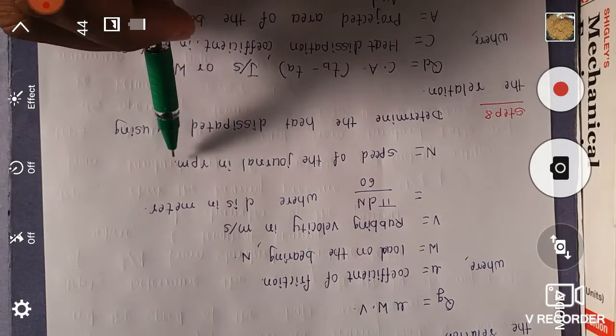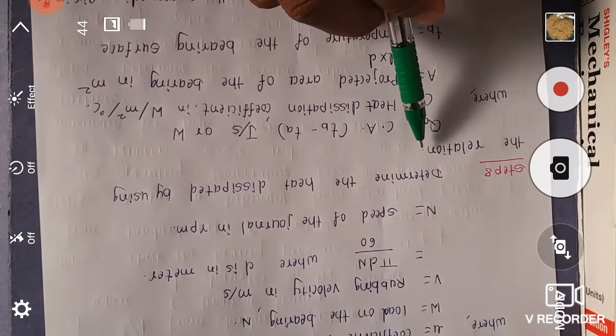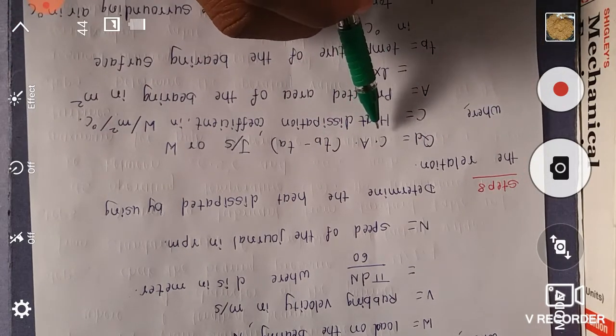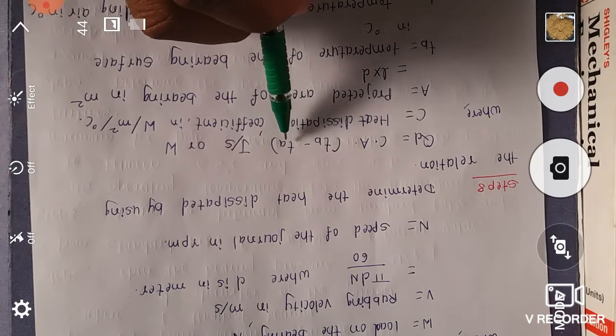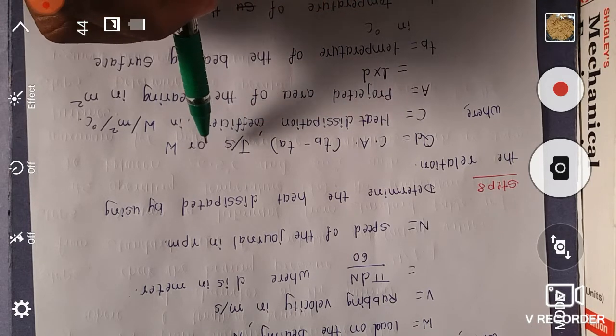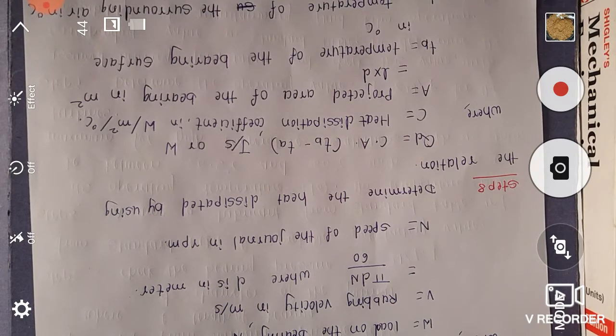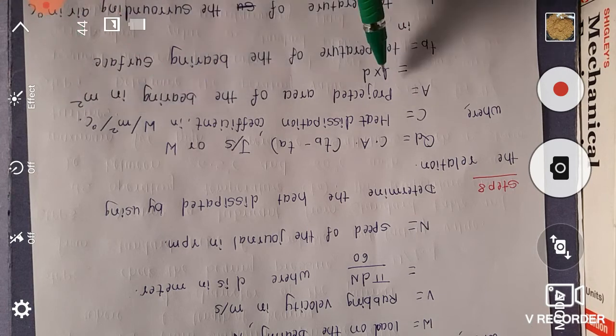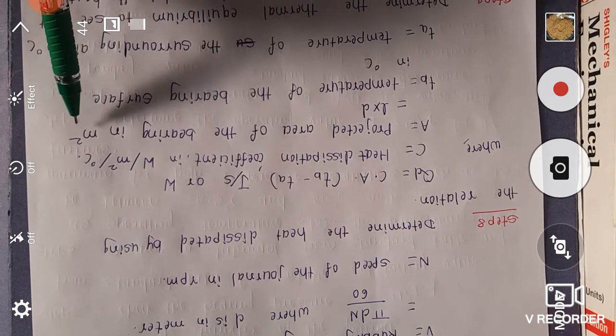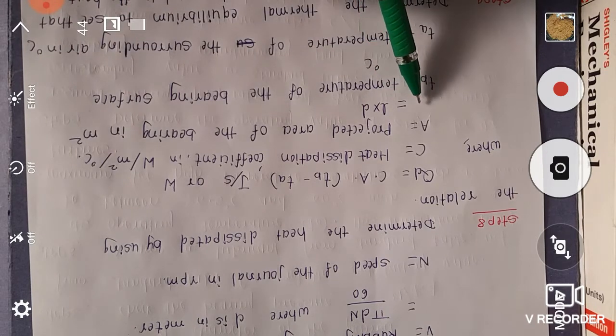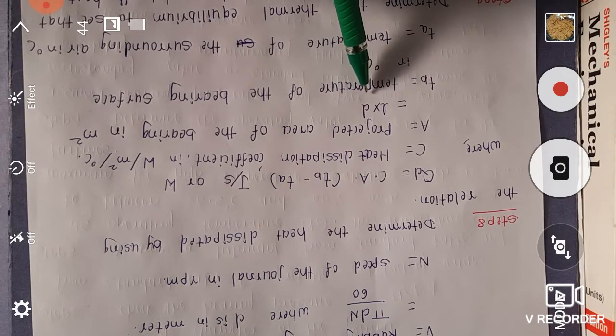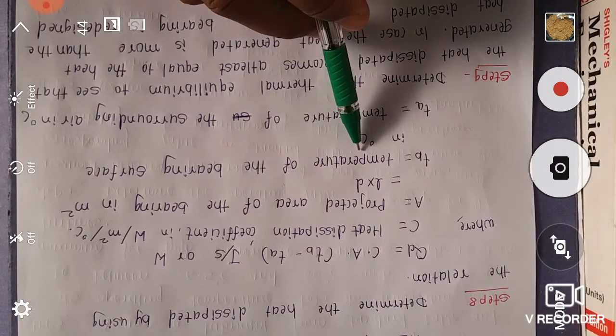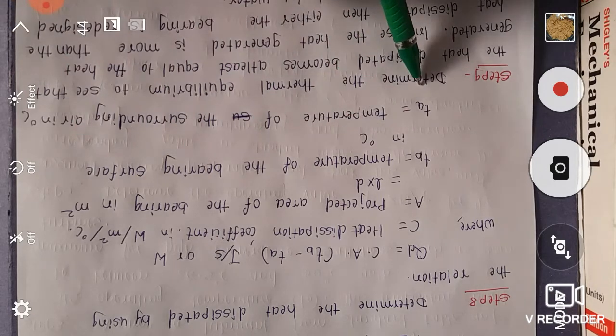Step 8: Determine the heat dissipated by using the relation QD equals C into A into bracket TB minus TA, in Joules per second or in Watt. Where C is heat dissipation coefficient in Watt per meter square per degree Celsius, A is the projected area of the bearing in meter square, here A is L that is length of bearing into diameter D. TB is temperature of the bearing surface in degree Celsius, TA is temperature of the surrounding air in degree Celsius.